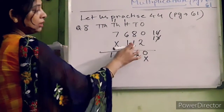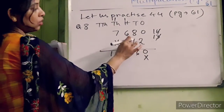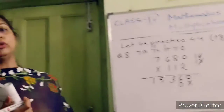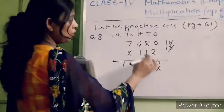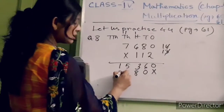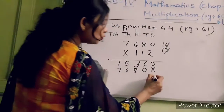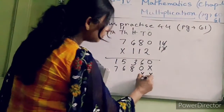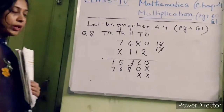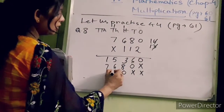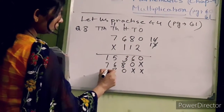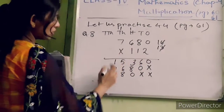Now multiply this number with one — the tens digit. One into zero is zero. When you multiply any number with zero you will get zero. One into eight is eight. One into six is six. One into seven is seven. After that put zero on the ones place, after the tens place. Now multiply again with one — the hundreds digit. One into zero is zero. One into eight is eight. One into six is six. One into seven is seven.